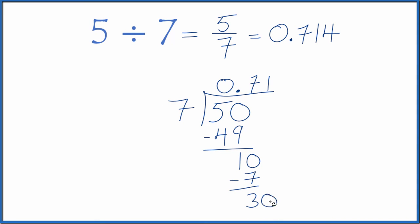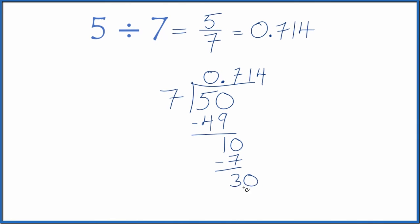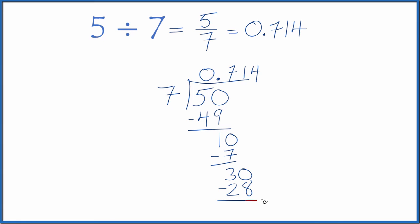Subtract, we get 3. 7 doesn't go into 3. Call it 30. And we move over 1. 4 times 7, that's 28. Subtract, we have 2. And we can just keep going here. I'm going to stop here at 0.714. That's what we got before in our calculator. So this number is rounded. It does keep going a bit further. But if you need to, just keep dividing.